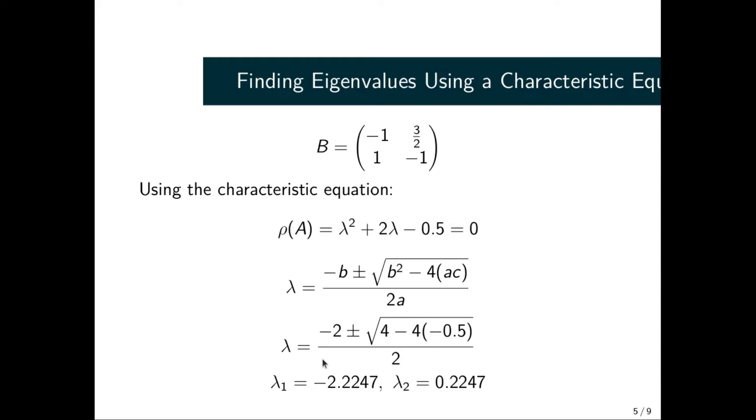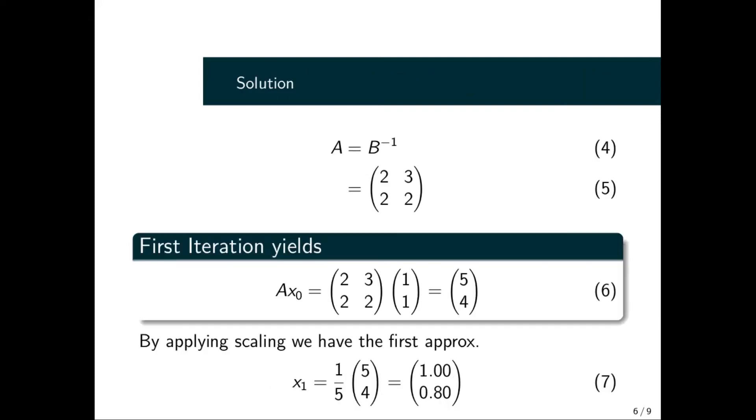In terms of the magnitude, we have λ₁ being the largest value, and our λ₂ is 0.2247, which is the least eigenvalue of the matrix. At the end, we are going to use this one to verify our solution.